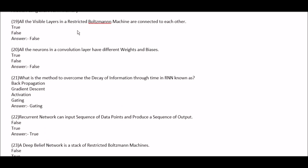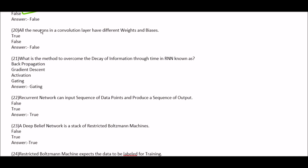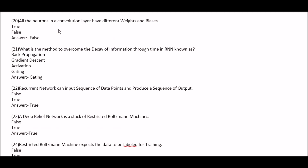All the visible layers in a restricted Boltzmann machine are connected to each other — true or false? This is false. Next question: all the neurons in a convolution layer have different weights and biases — true or false? This is false.